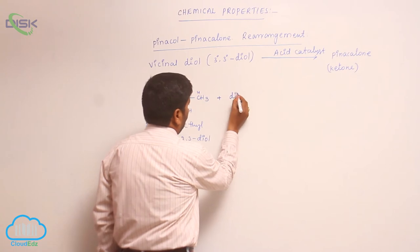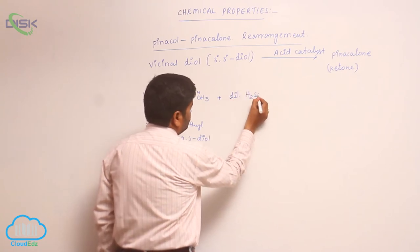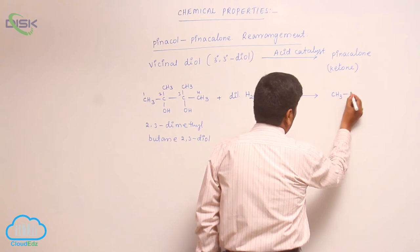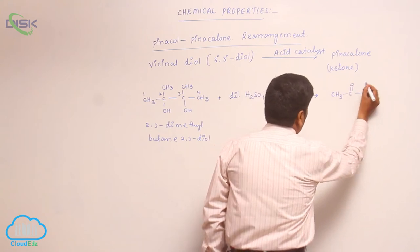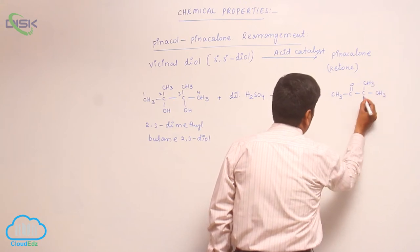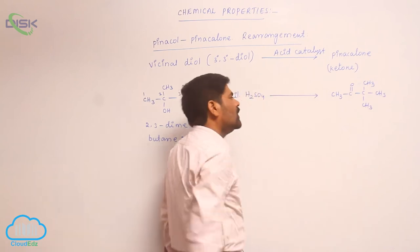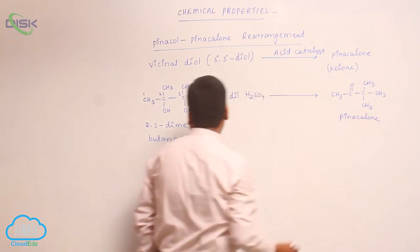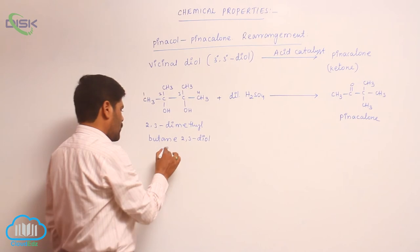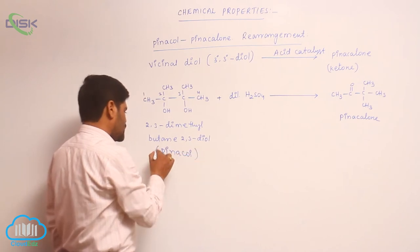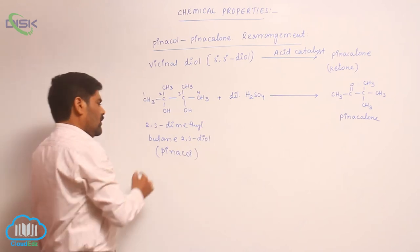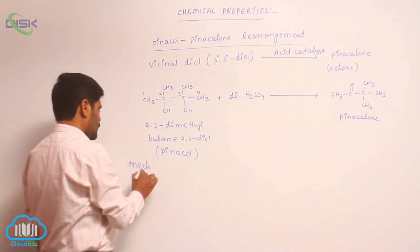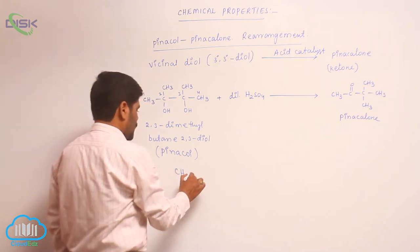In the presence of dilute sulphuric acid, this vicinal diol converts into pinacolone — a ketone with a C=O group and methyl groups. This conversion of pinacol into pinacolone is the basis of the rearrangement.